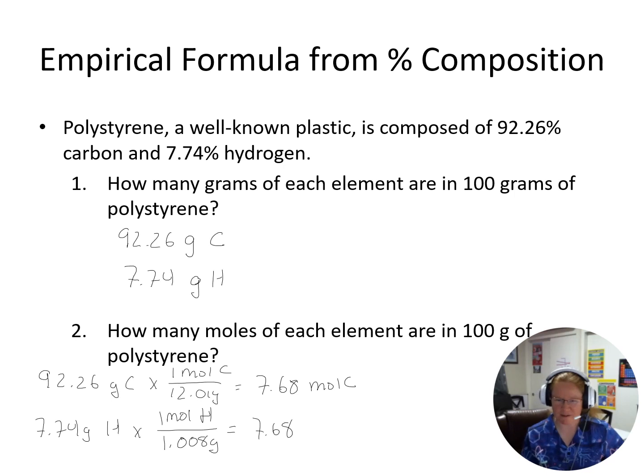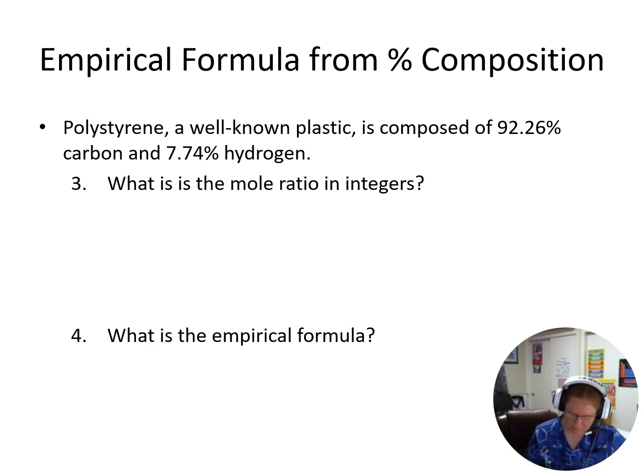I have to switch to another slide because I don't have enough room to write everything, but we're going to use the same numbers. So what is our molar ratio? Well, if I do C 7.68, H 7.68, divide, I get 1 to 1, because 7.68 divided by 7.68 equals 1. 7.68 divided by 7.68 equals 1. So our mole ratio is 1 to 1. So here we get that empirical formula of CH.